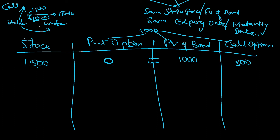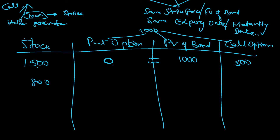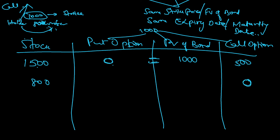Let's take another number less than 1000 — say the stock price is 800. For the call option with strike price 1000: the holder is bullish, but the stock is trading at 800, so he will let the contract expire. The call option will have no value, so call option = zero.